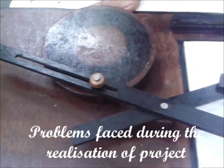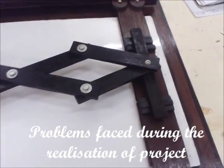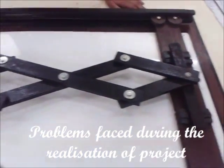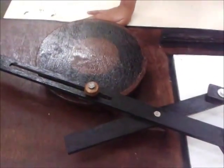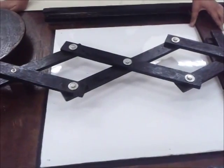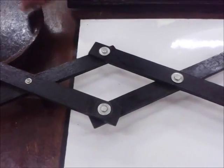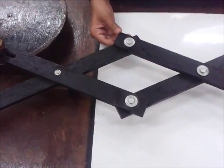Coming to the problems and challenges that we faced during the realization of this project. Initially we had thought of making a motor-operated automatic whiteboard eraser, so deciding the material was a tough task. Earlier we had thought of sheet metal for making these links, but sheet metal would be too heavy to be run by a motor. So we turned to wood and made these links by wood.